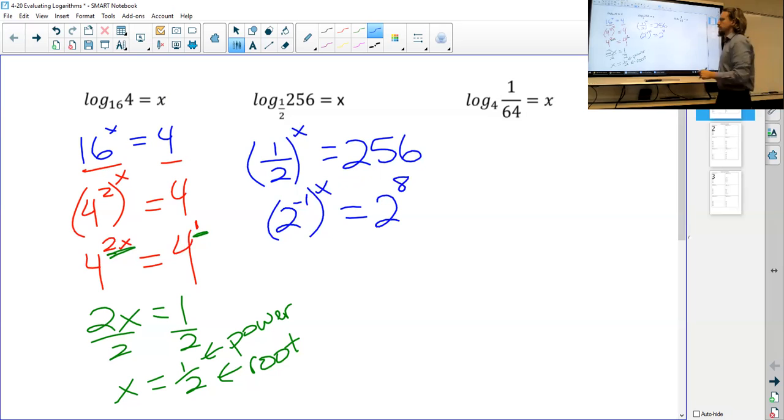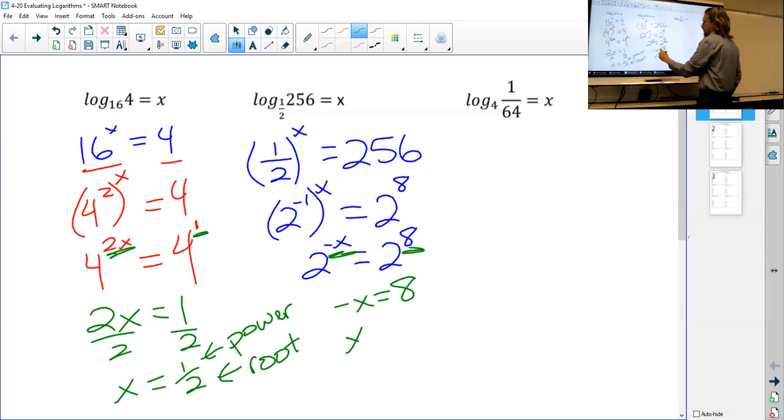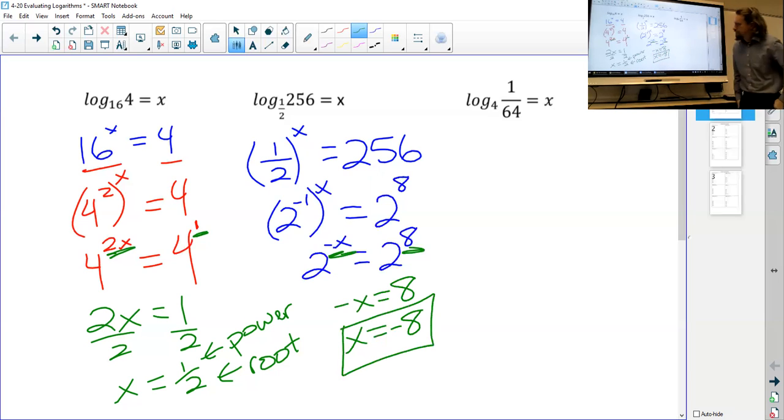Okay. Hopefully you have a chart with all your powers of 2. It's a handy thing to have. If we simplify this, this becomes 2 to the negative x equals 2 to the 8th. And then we see we have the same base. So we can compare our powers. So negative x equals 8 or positive x equals negative 8. Not too bad.